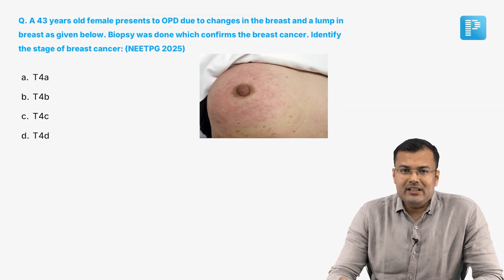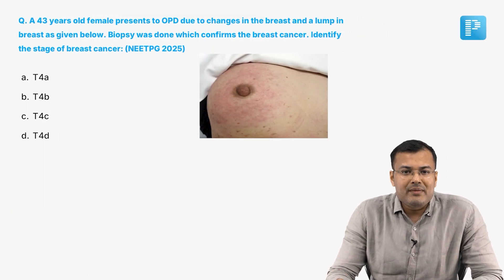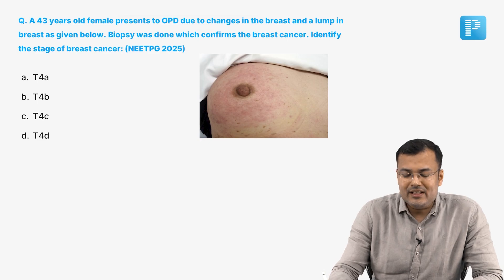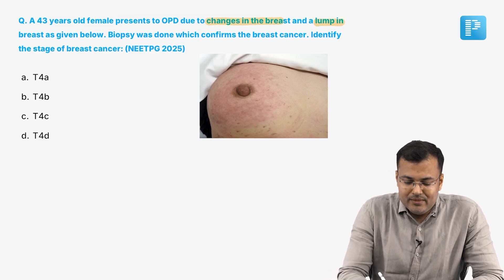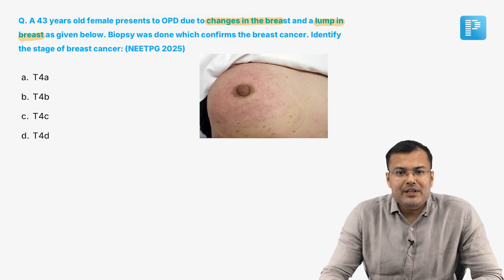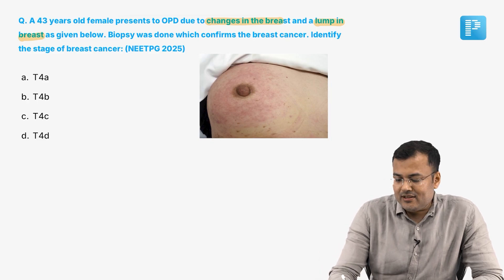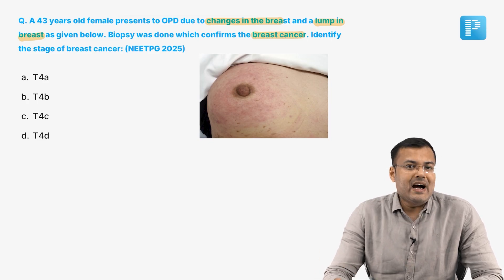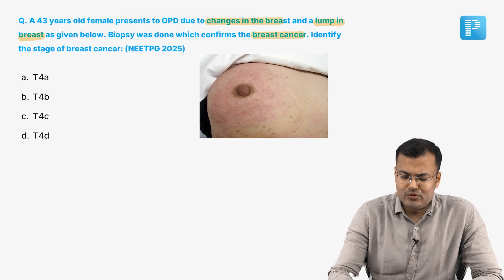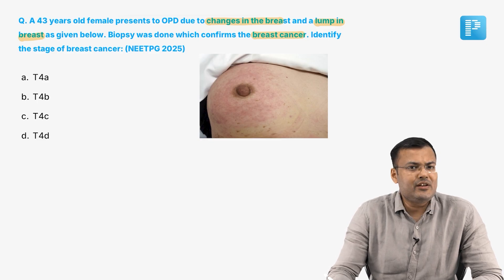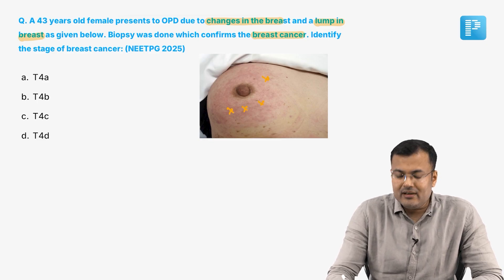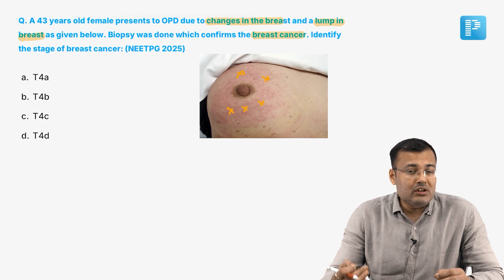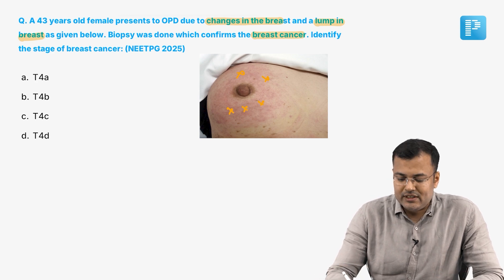First, see this question. A 43-year-old female presents to OPD due to changes in the breast. There is a lump in the breast as given below. Biopsy was done which confirms breast cancer. Identify the stage of breast cancer. Can you notice the changes in the breast skin? There is redness in the breast skin involving more than one third of the breast skin. The diagnosis is inflammatory breast cancer.